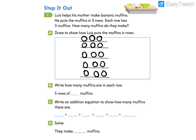Now let's answer letter B. Write how many muffins are in each row. We have 5 rows of 3 muffins. Letter C asks us to write an addition equation to show how many muffins there are. Go ahead and complete this, showing the equal addends. We add that equal addend of 3, 5 times for each of those rows.